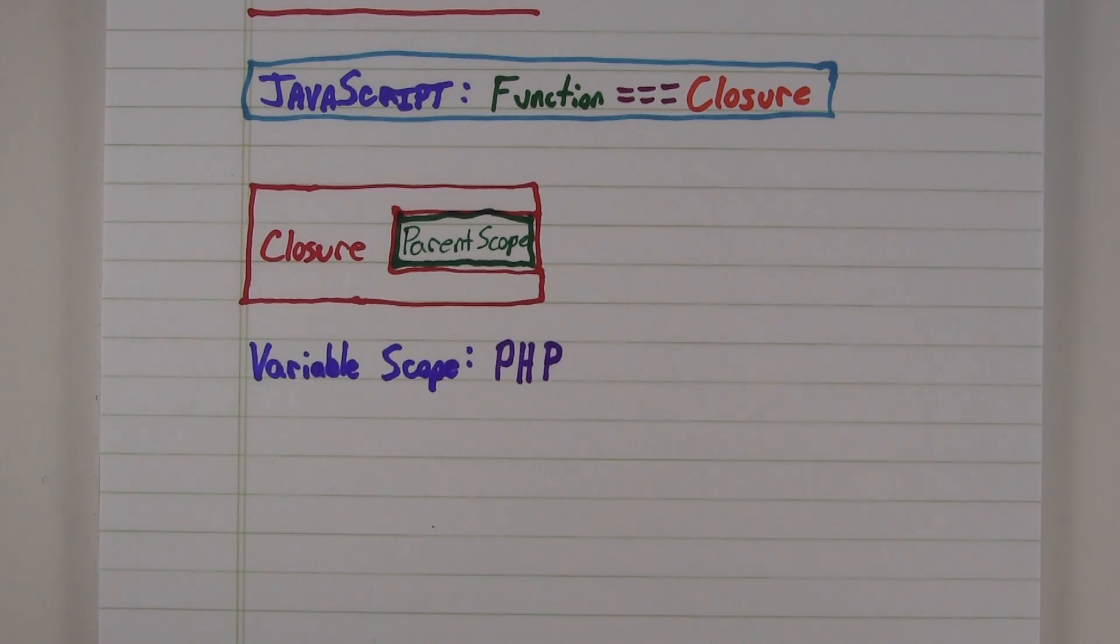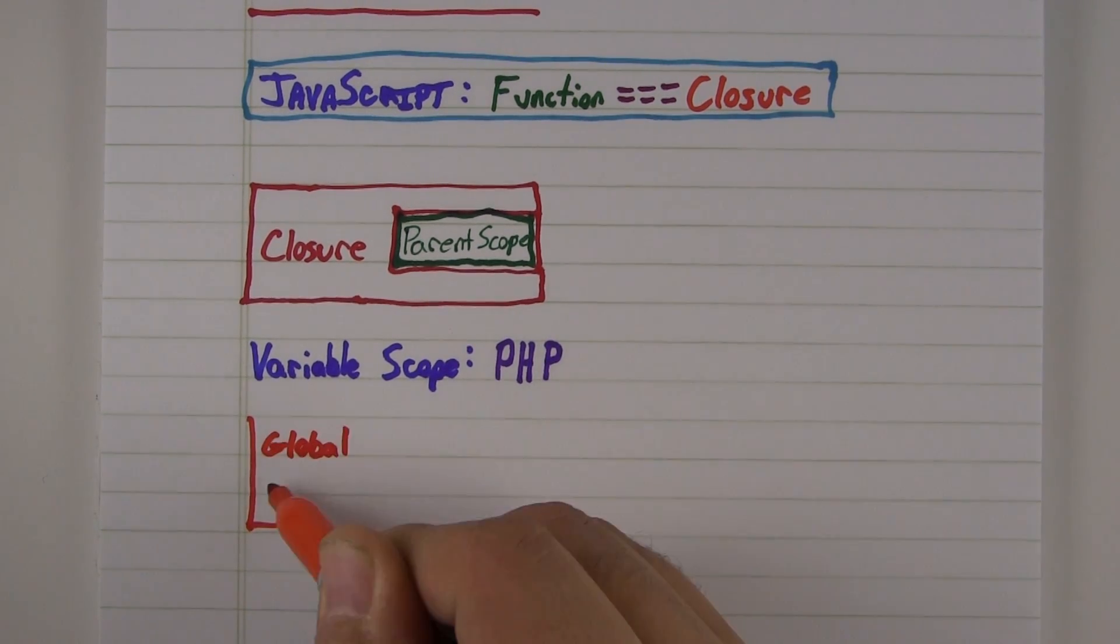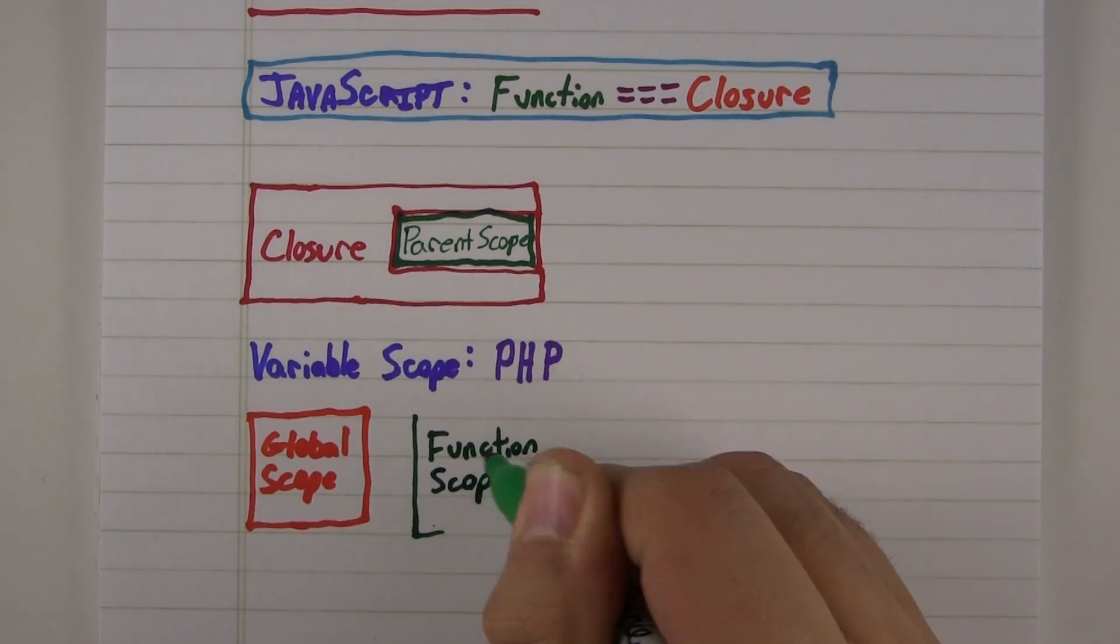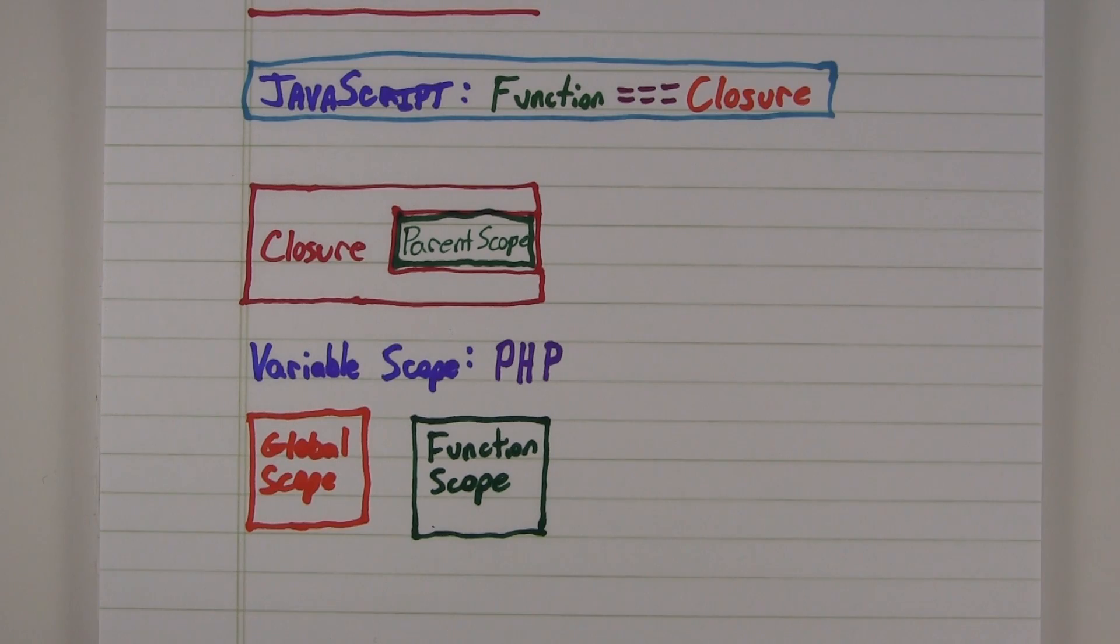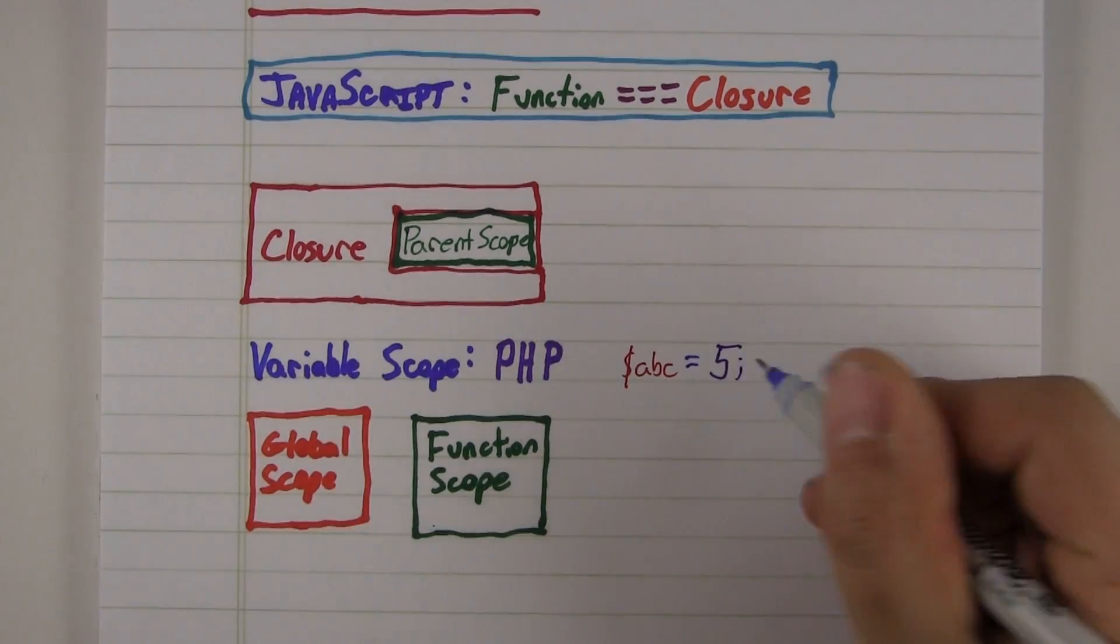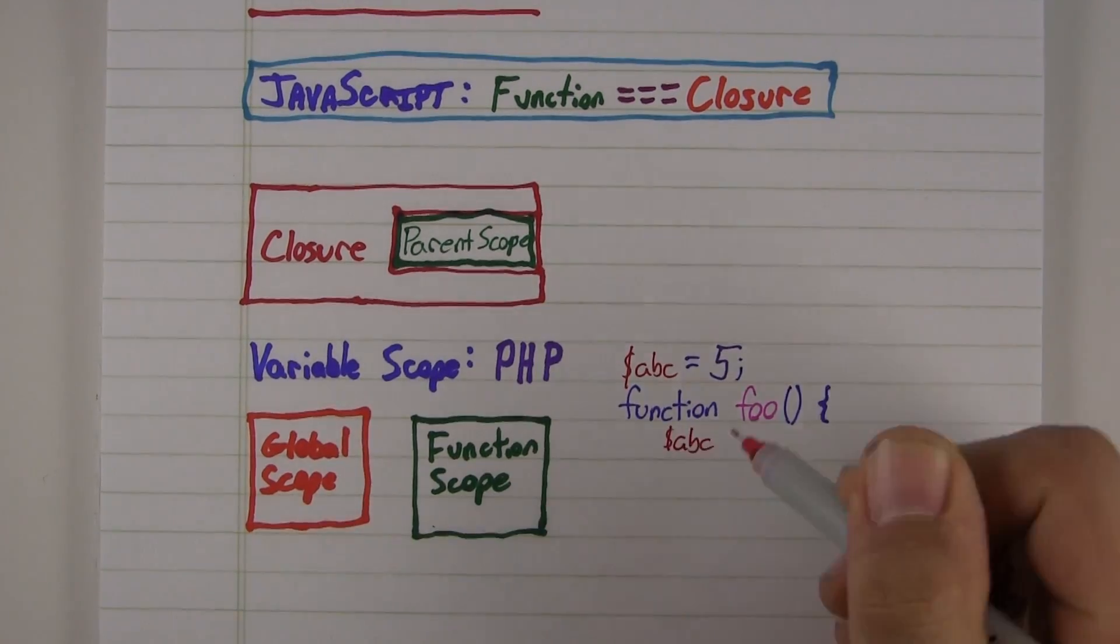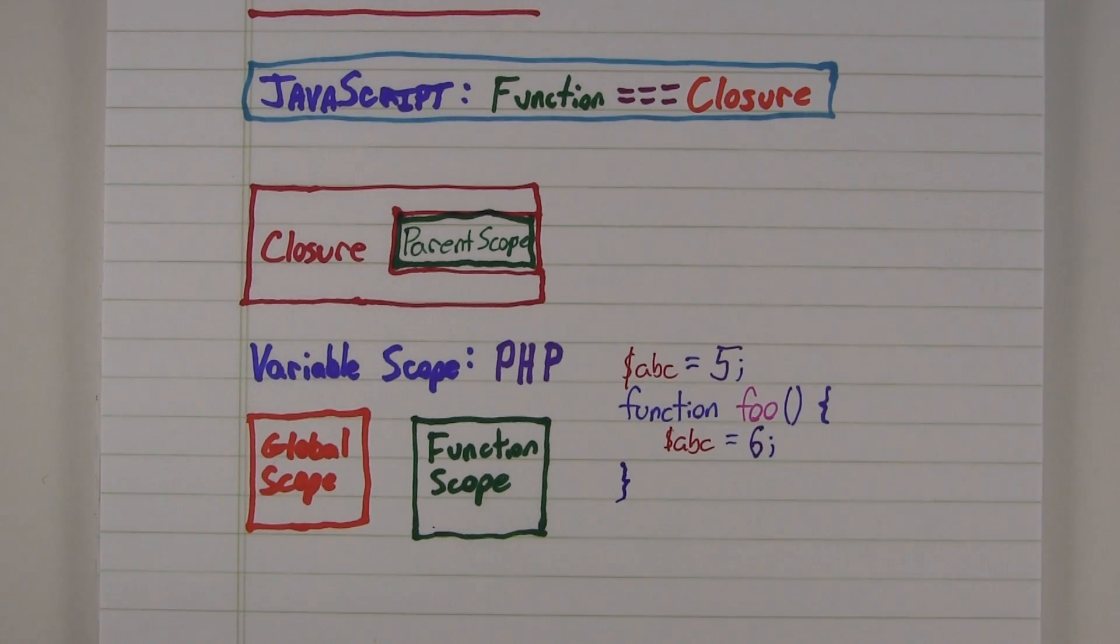PHP has two main variable scopes, global scope and function scope. The default scope is the one that you are currently operating in. So if we assign a variable inside of a function, the variable is set inside the function's scope.